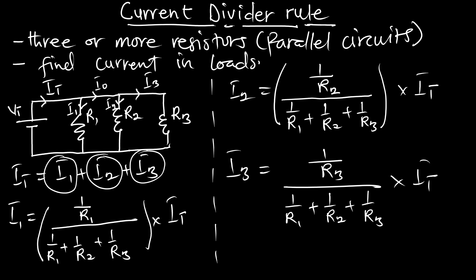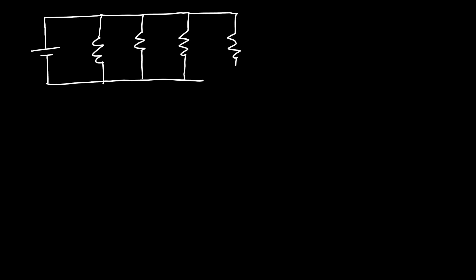These expressions allow us to calculate the individual current in each branch when we have three or more resistors in a parallel circuit. Now if we have four resistors, let's look at a circuit with resistor one, resistor two, resistor three, and resistor four.